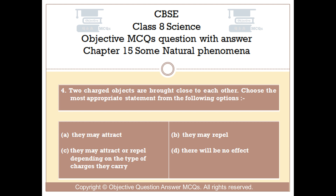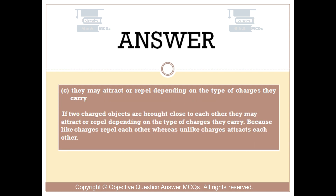The right answer is Option C — they may attract or repel depending on the type of charges they carry. If two charged objects are brought close to each other, they may attract or repel depending on the type of charges they carry, because like charges repel each other whereas unlike charges attract each other.